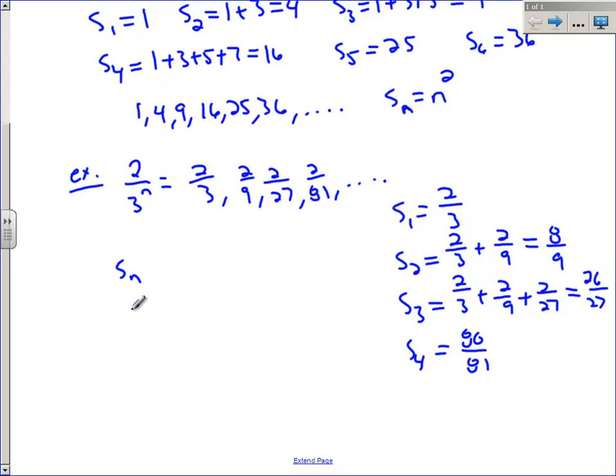Let's take a look at this list. Our partial sums look like this: 2 thirds, 8 ninths, 26 over 27, and then 80 over 81. And what we want to do is see if we can find the pattern.